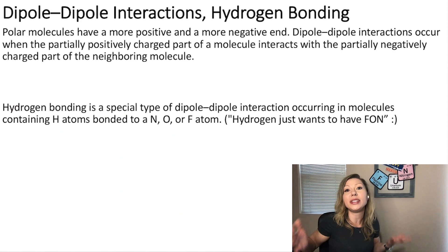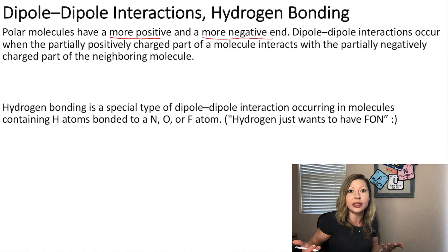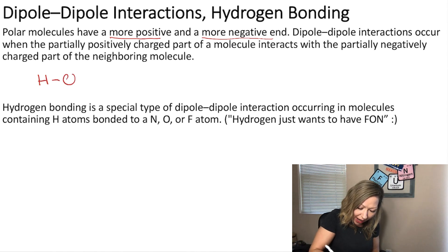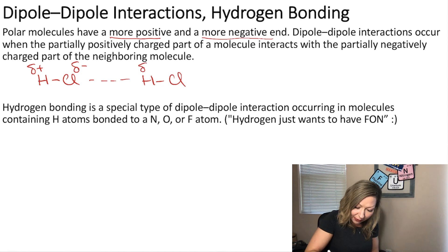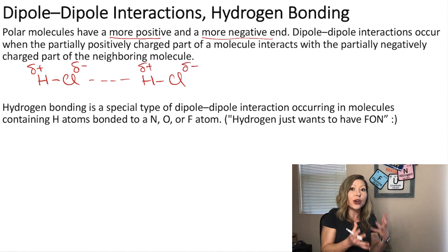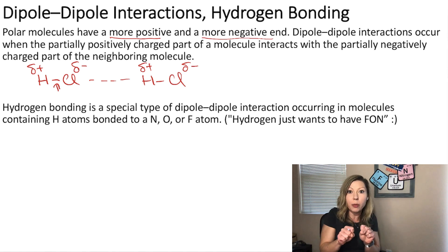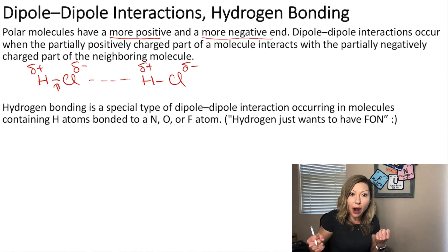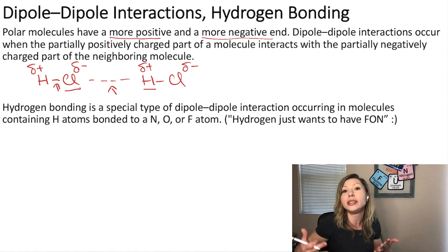Let's talk about dipole-dipole interactions. When you have a polar molecule with a more positive and a more negative end, you are going to see so-called dipoles. Just as I discussed for hydrochloric acid at the beginning of the video, we have a partial negative charge on the chlorine atoms and a partial positive charge on the hydrogen atoms. If we have two molecules, the negatively charged chlorine atom is going to be attracted to the positively charged hydrogen atom of another molecule. The bond between a chlorine atom of one molecule and the hydrogen atom of the other is an intermolecular attraction — more specifically, a dipole-dipole interaction.